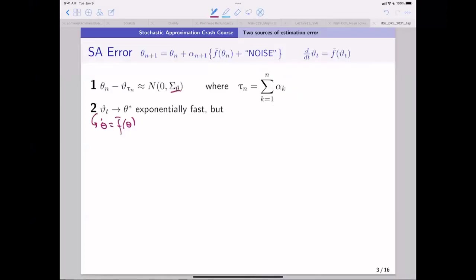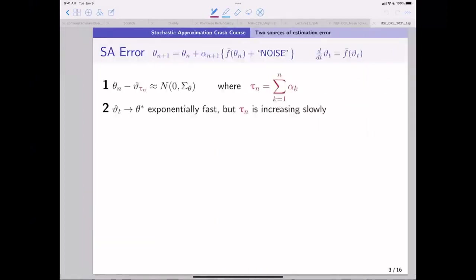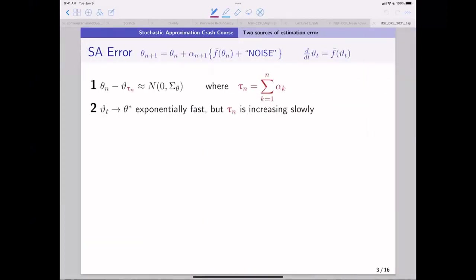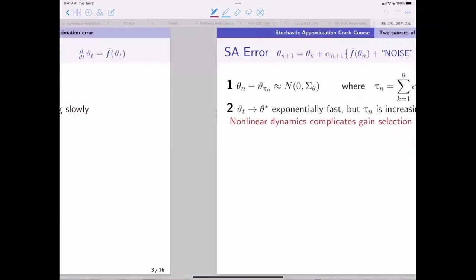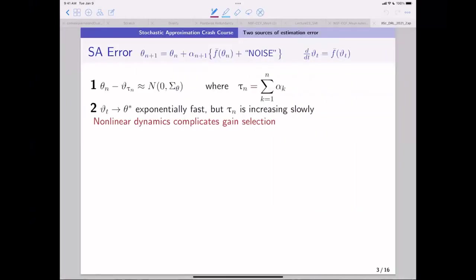So it could be that the solutions to the ODE converge exponentially quickly, but because tau_N grows so slowly, we get into trouble. I'll put a 1 over N here. That's not the issue. But what happens is that this tau_N goes to zero so slowly that we get trouble. And nonlinear dynamics makes this really hard because as I'll show you in one example. So there's two factors here.